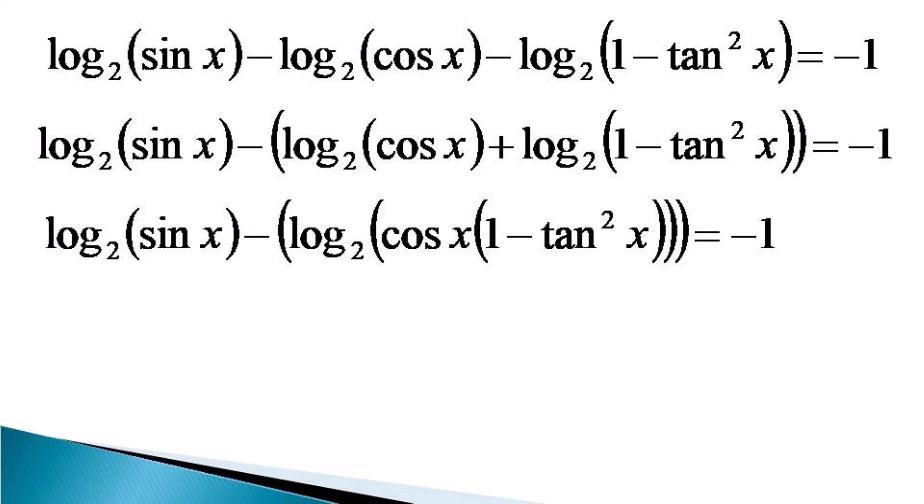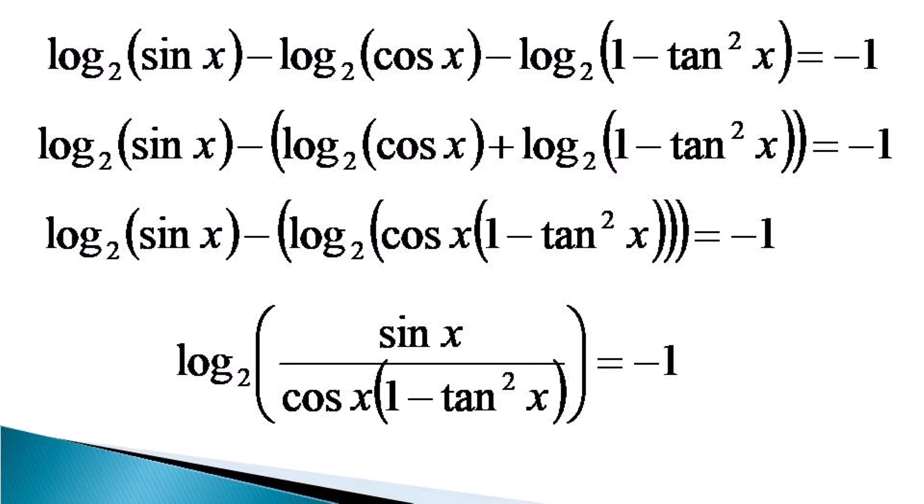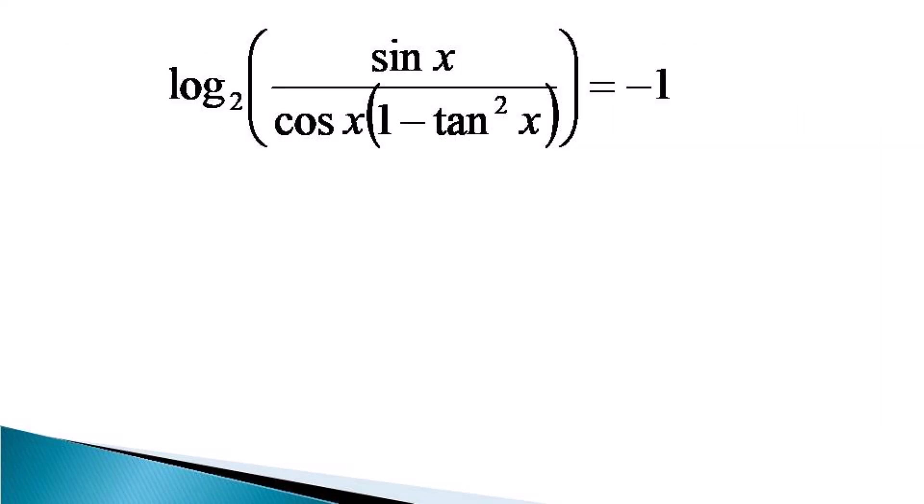Now we use the division property of log on the remaining terms to get an equivalent equation like log of sin x divided by cos x into 1 minus tan²x equals minus 1. Then we use the definition of log on this equivalent equation and it becomes sin x by cos x into 1 minus tan²x equals 2 raised to the power minus 1.